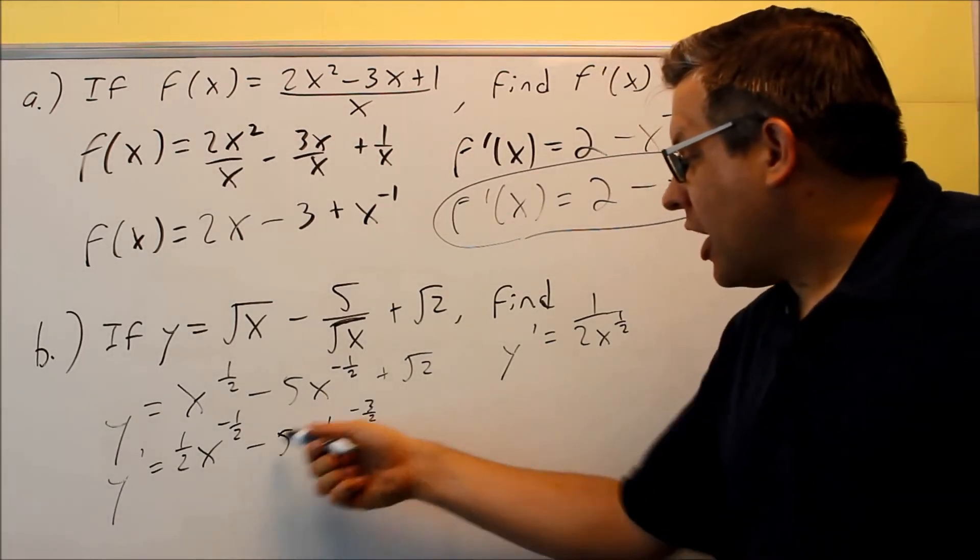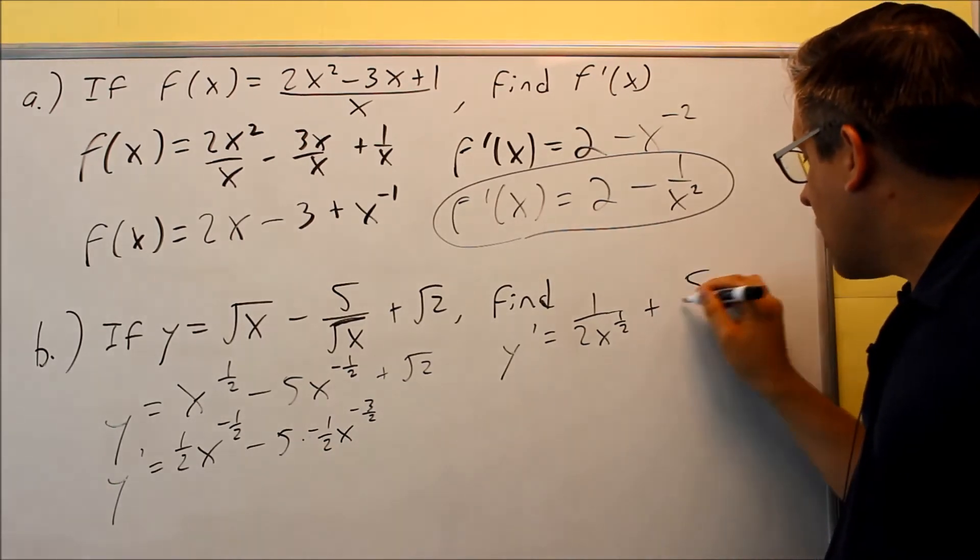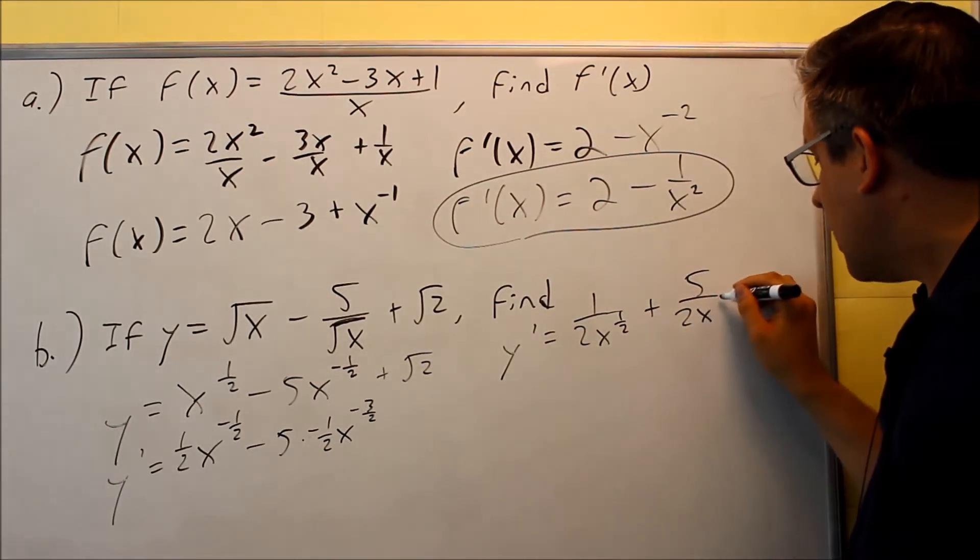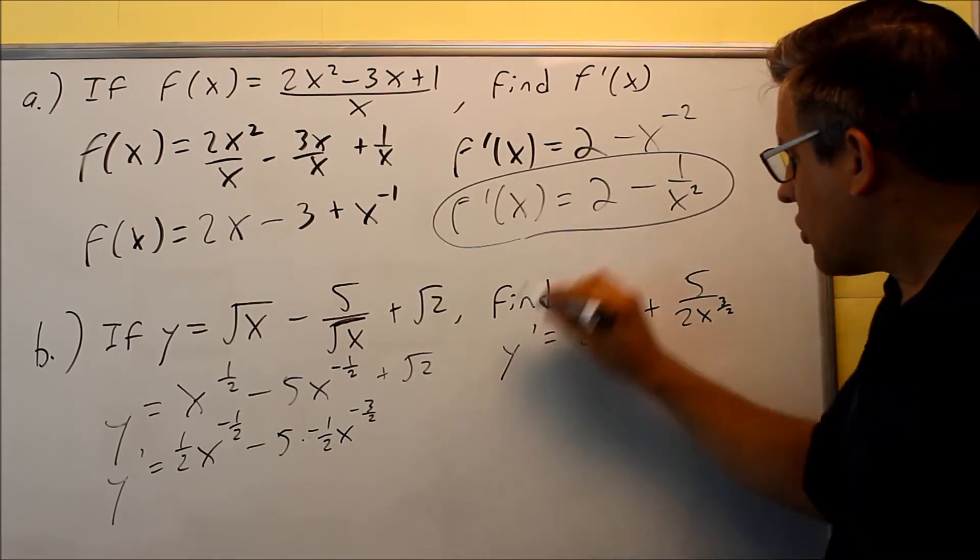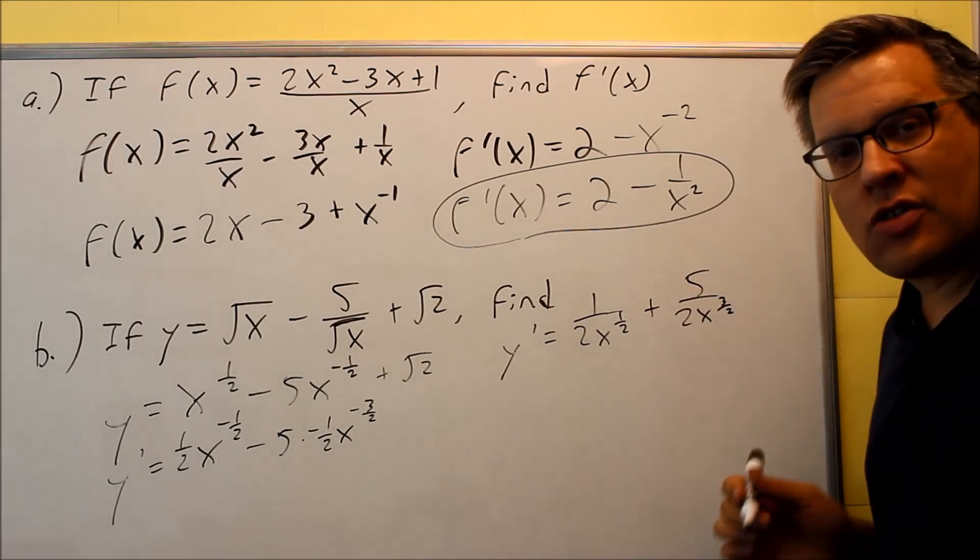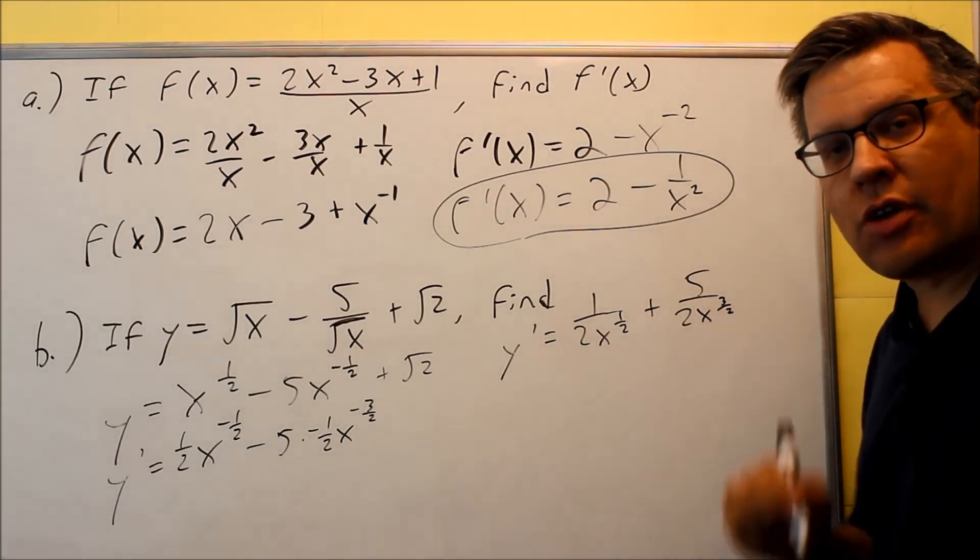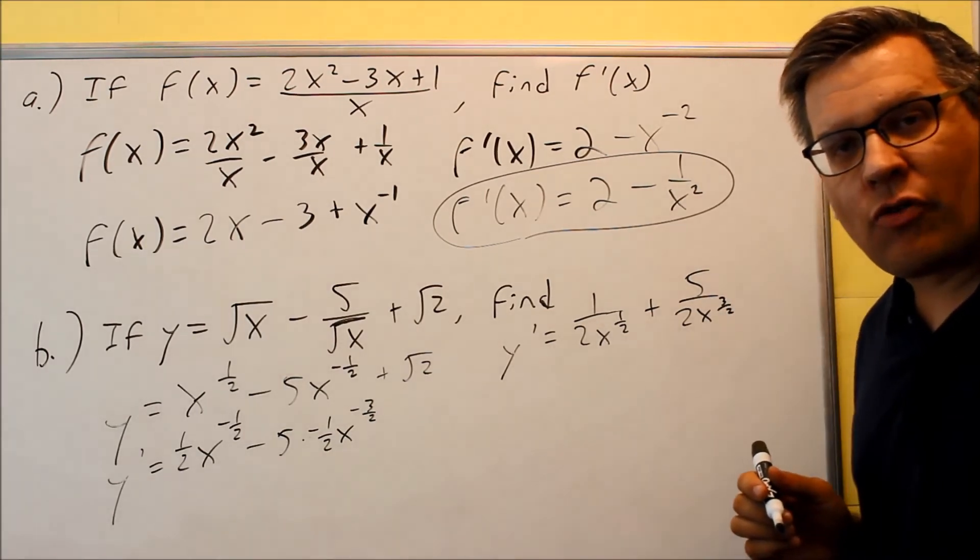This is all together. So negative 5 times negative 1 half, you'll get a plus. 5 is on top, a 2 is on the bottom, and this will be x to the positive 3 halves. This is okay to leave your answer in that form. You don't need to worry about changing it unless it specifically asks you to write your answer as a single fraction. Let's suppose it did ask us to write that as a single fraction.